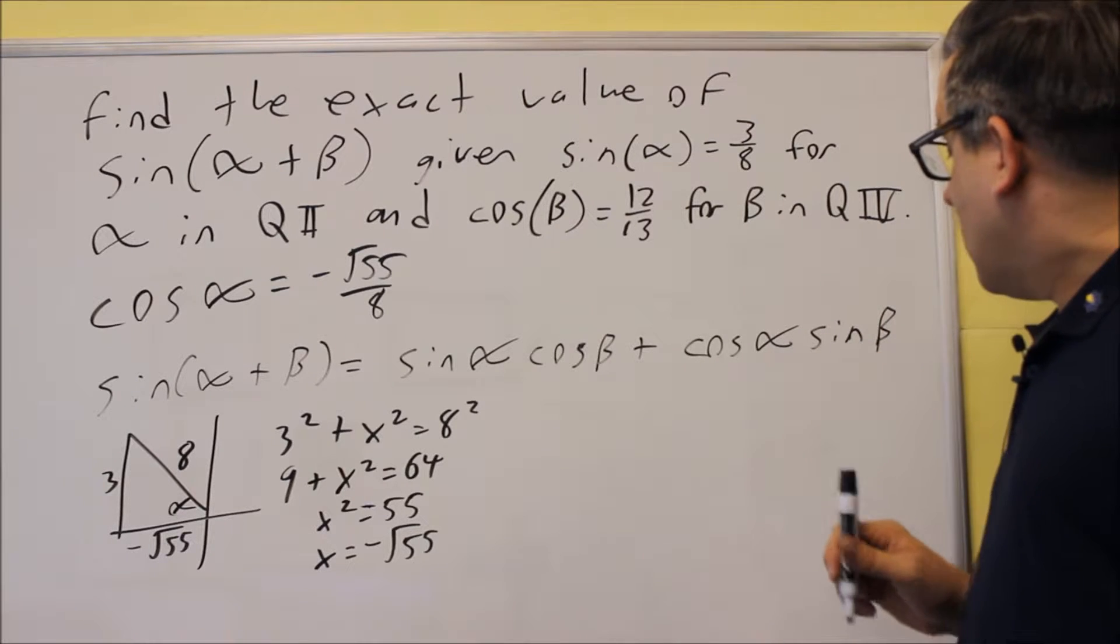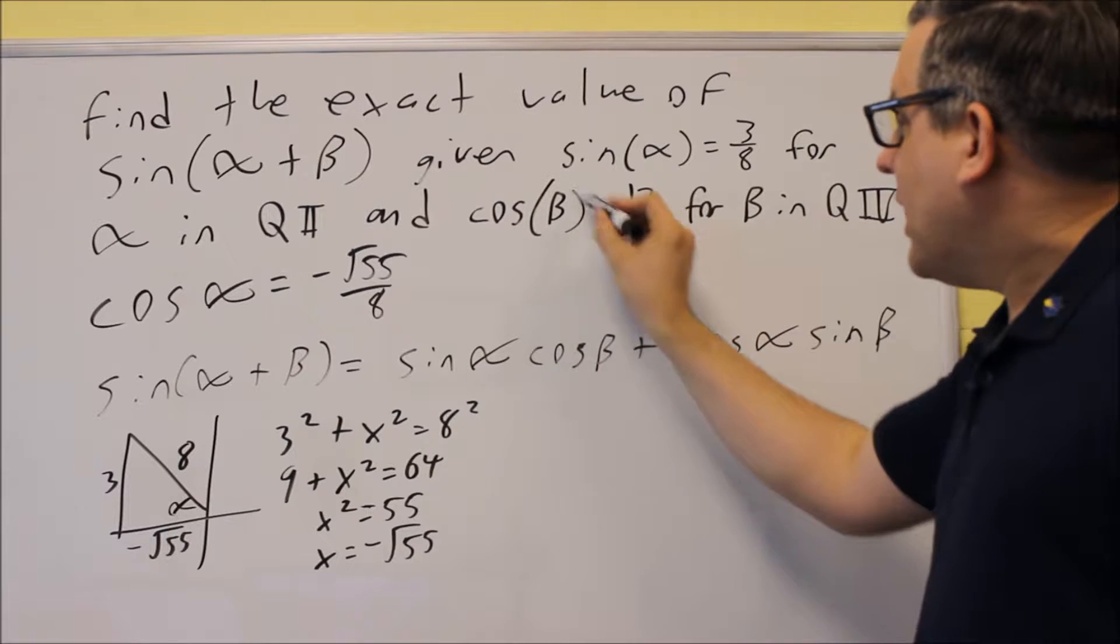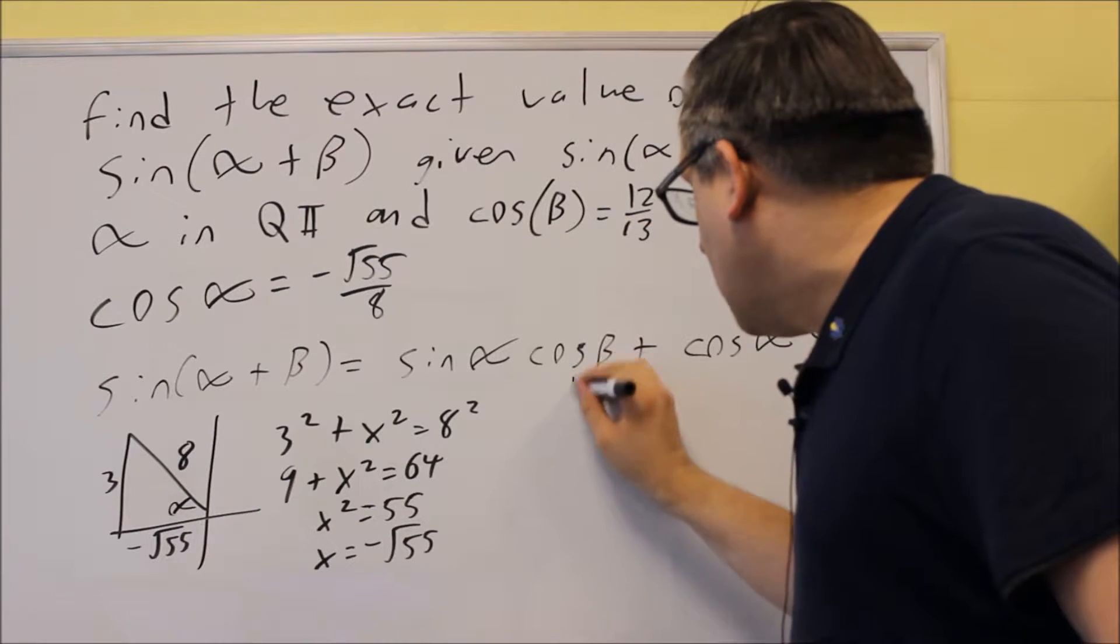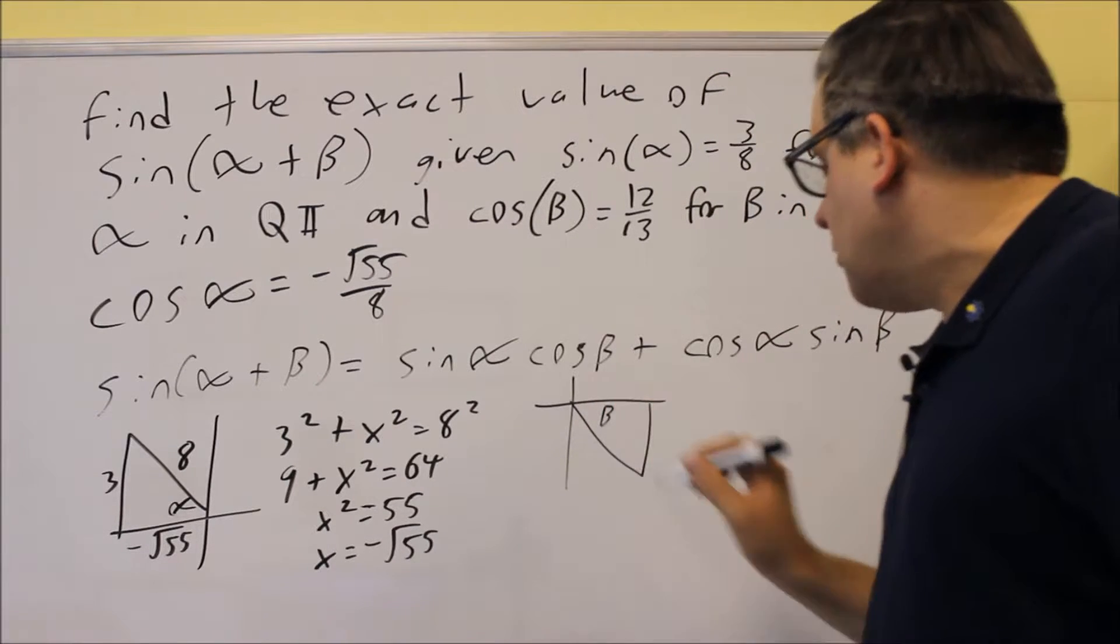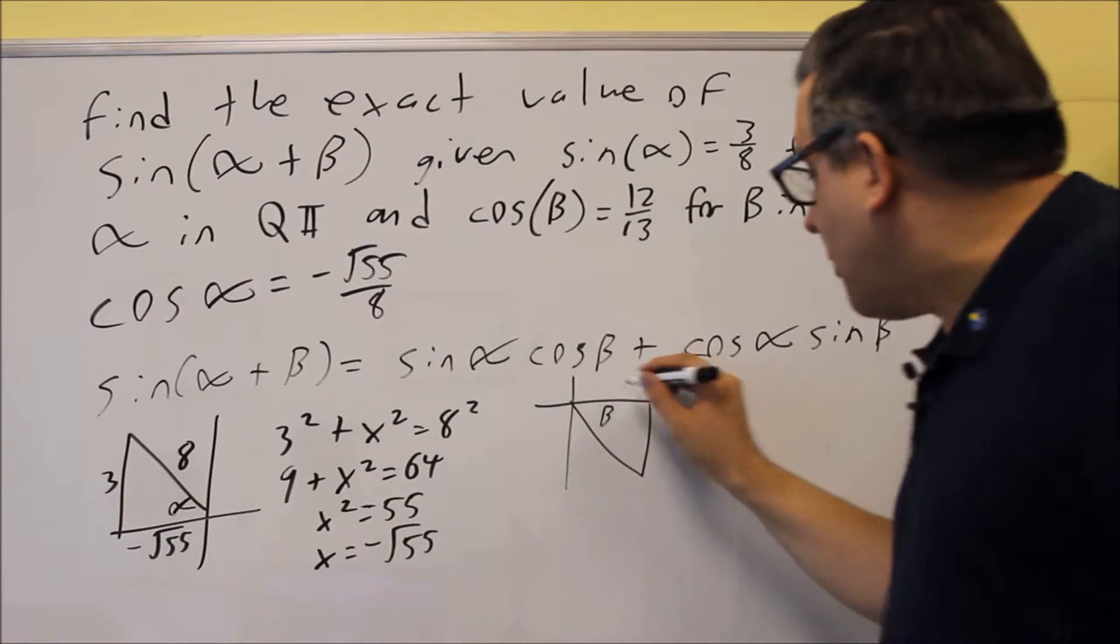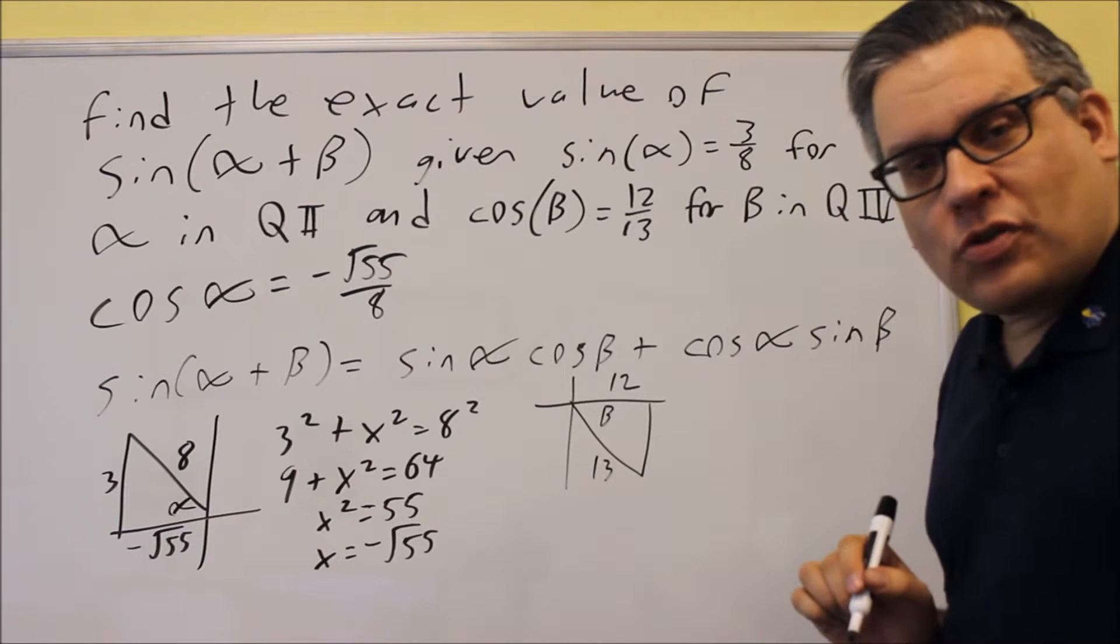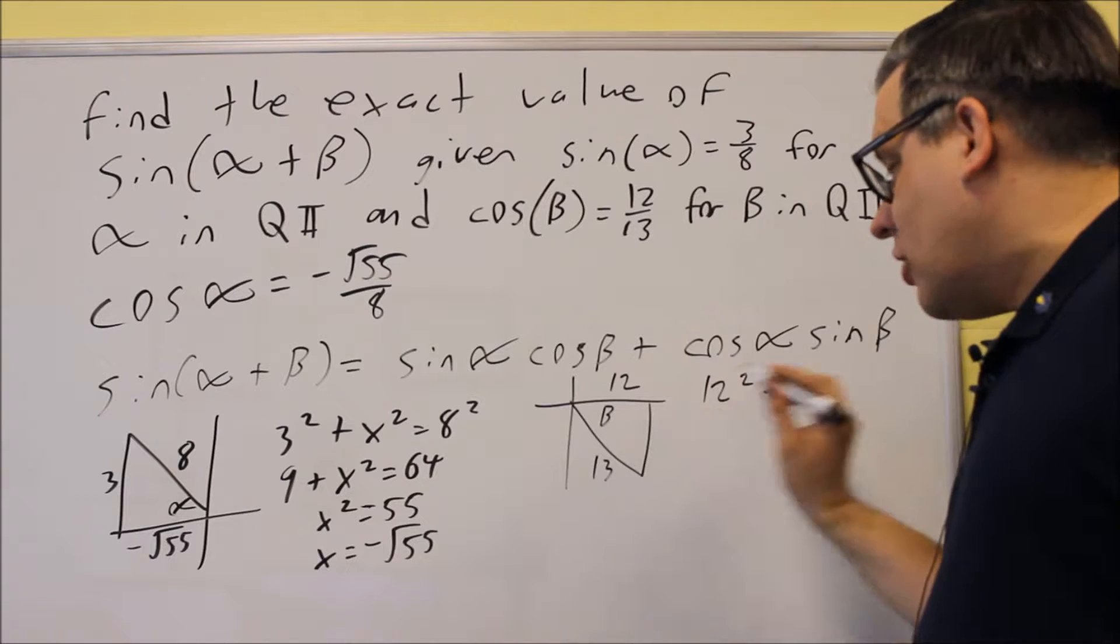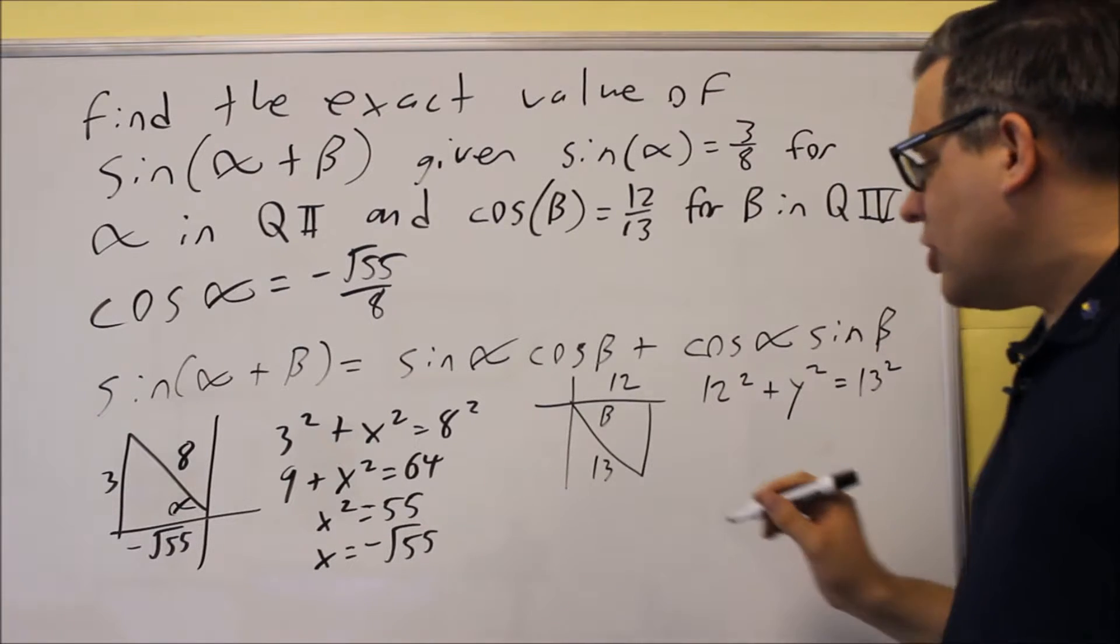Let's go ahead and find sine beta. Now, that beta, the angle, that's in quadrant number 4. So we're going to now draw a triangle in quadrant 4. This is going to be beta. We'll use our definition for cosine adjacent over hypotenuse, 12 over 13. Once again, we're going to use Pythagorean theorem. We have 12 squared, missing side, I'll call that y, y squared, and that's going to equal 13 squared.